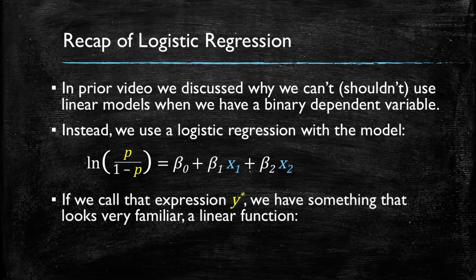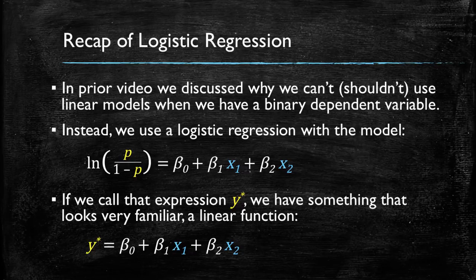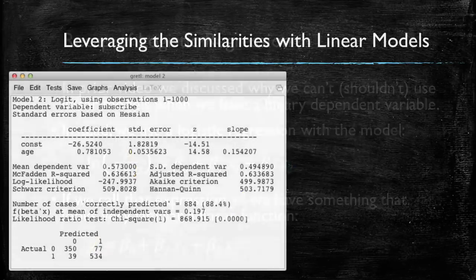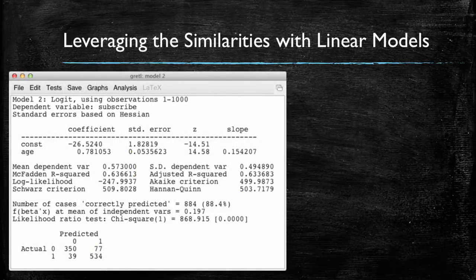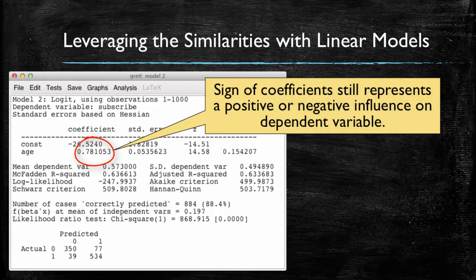If we call that expression y-star and simply rewrite it, then we end up having something that looks very familiar to us — a linear expression. There are actually several similarities between linear models and logistic regression models that we can leverage. For instance, if we have the output of a regression where our dependent variable was 'subscribe', indicating if a customer subscribed to a given magazine or not, and we find that the coefficient for age is positive, we can say that as customers grow older, they are more likely to subscribe. We can think of this as a magazine targeted towards older people.